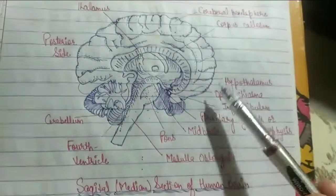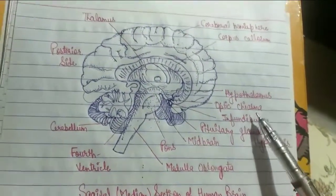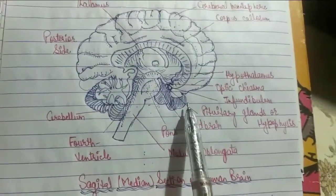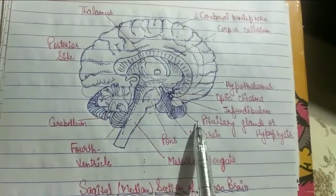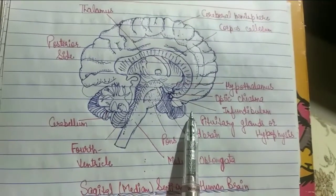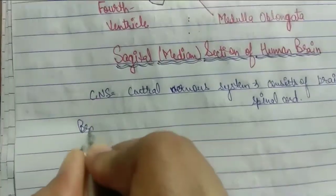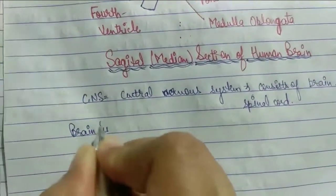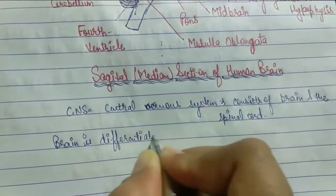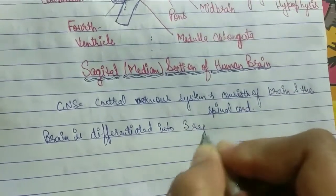Now, this is a sagittal section, which is a median section of the human brain. We have studied that the brain is differentiated into three main regions.